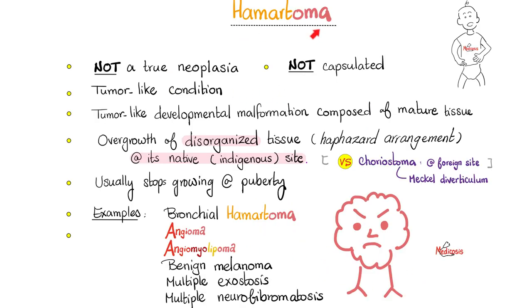What is a hematoma then? It's not a true neoplasia and it's not capsulated. It's a tumor-like growth — a developmental malformation composed of mature tissue. It's an overgrowth that is disorganized and haphazard. It is located at its native or indigenous site.